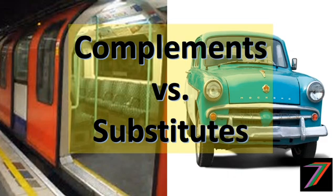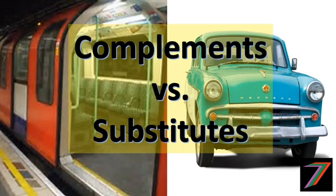To recap: complementary goods, such as toast and jam, work together to improve the experience — you add jam to the toast to improve the flavor. We've also looked at substitutes, like PlayStation and Xbox, which perform a similar role and you generally wouldn't want to own both. Another example of substitutes is traveling by car versus traveling by metro — if metro fares go down, people may switch to trains, and if driving costs fall, people may switch to driving.